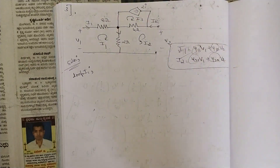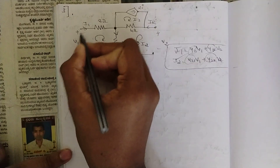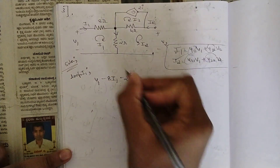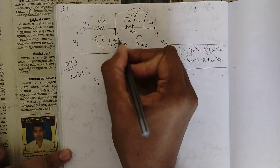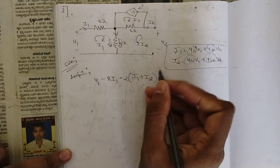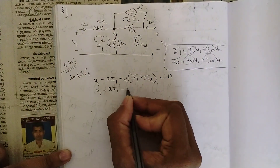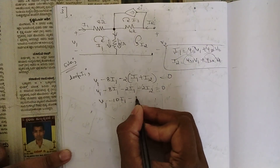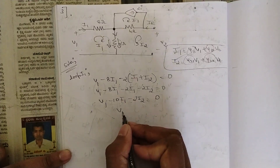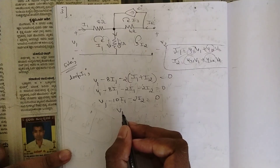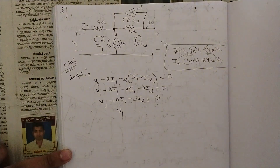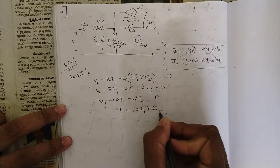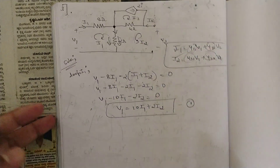Applying loop analysis: starting with +V1, then minus 8·i1, then minus 2 times (i1 + i2) — plus i2 because both loops share the same direction through this resistor — equals zero. Solving: V1 minus 8i1 minus 2i1 minus 2i2 = 0, so V1 minus 10i1 minus 2i2 = 0. Therefore V1 = 10i1 + 2i2. Name this Equation 1.